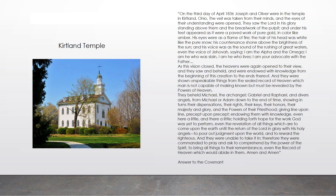Jehovah said: 'I am Alpha and Omega, I am he who was slain, I am he who lives, I am your advocate with the Father.' As this vision closed, the heavens were opened again and they were endowed with knowledge from the beginning of creation to the ends thereof, shown unspeakable things from the sealed record of heaven. They beheld Michael, Gabriel, and Raphael, and diverse angels from Adam down to the end of time, showing their dispensations, rights, keys, honors, majesties and powers of their priesthood — giving line upon line, precept upon precept.